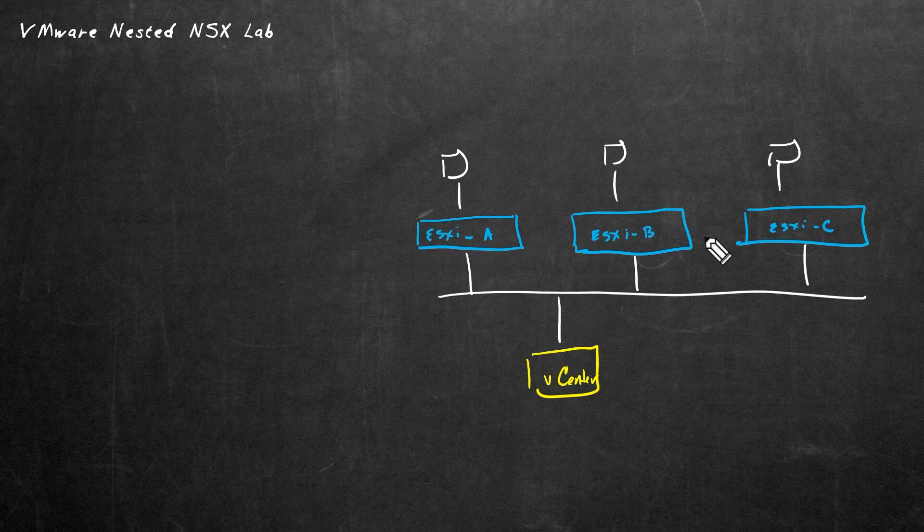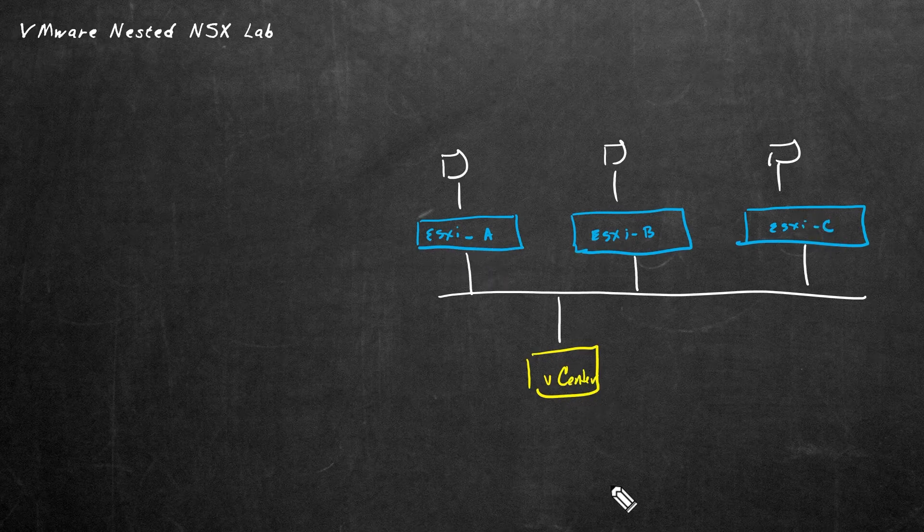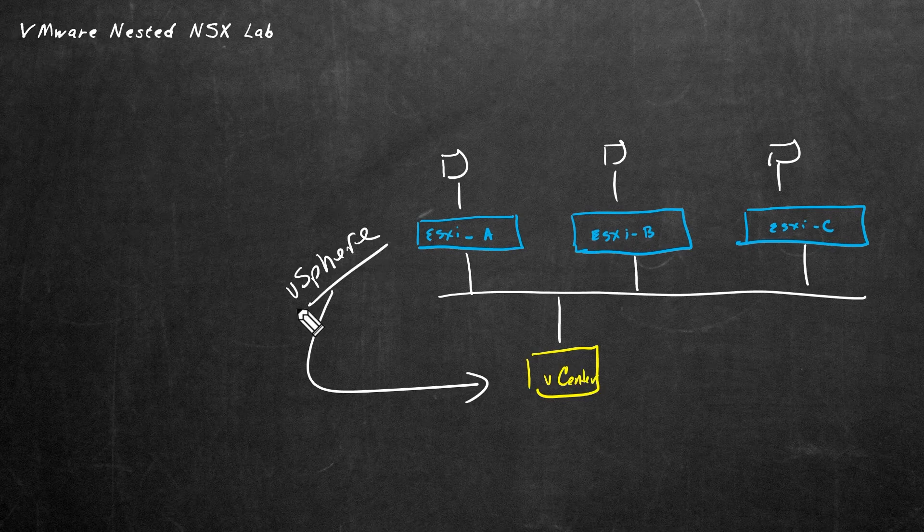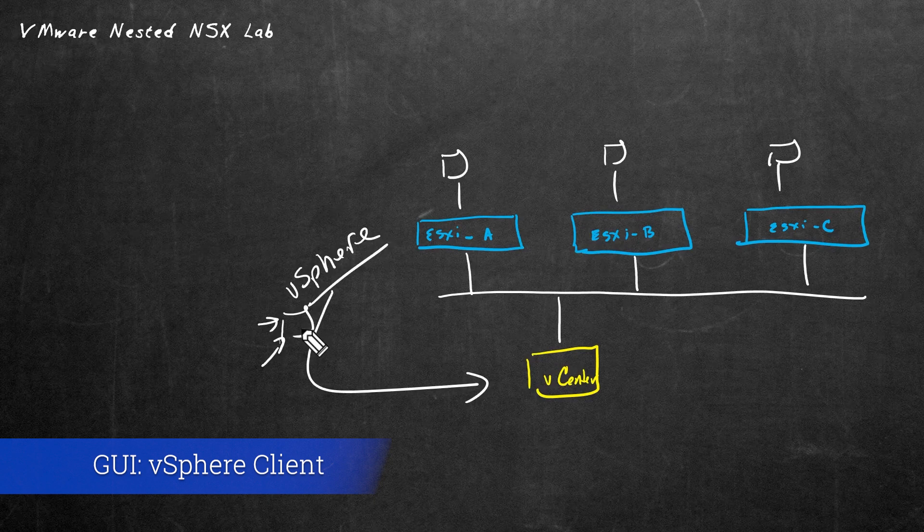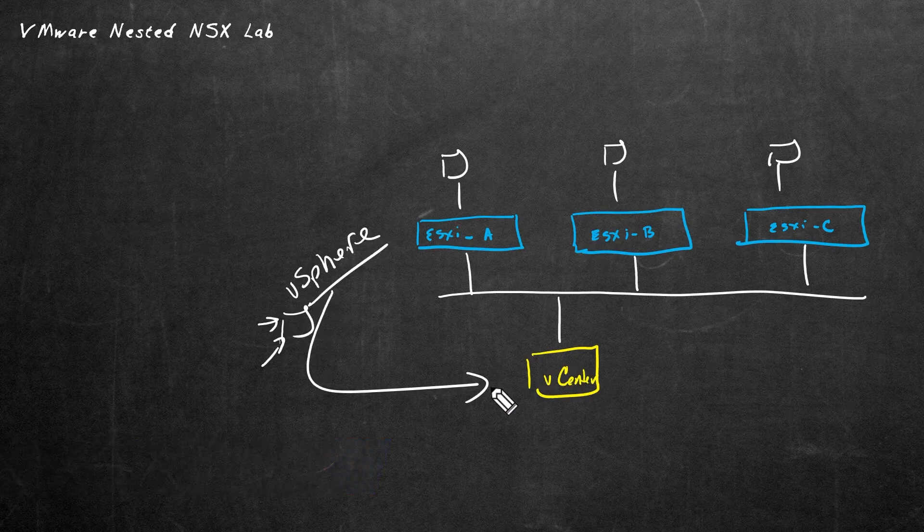And as a whole, these ESXi hosts, which are being managed by vCenter, that can be referred to as a vSphere environment. And when we're managing a vSphere environment, we're logging on to the vCenter, as I mentioned a moment ago. And the interface that we're provided to work with and manage our vSphere environment is called the vSphere client, which is a graphical user interface. So you and I are here at our management computer, and we bring up a browser that connects to the vCenter. And once again, that represents the vSphere client that we're using to manage our vSphere environment.